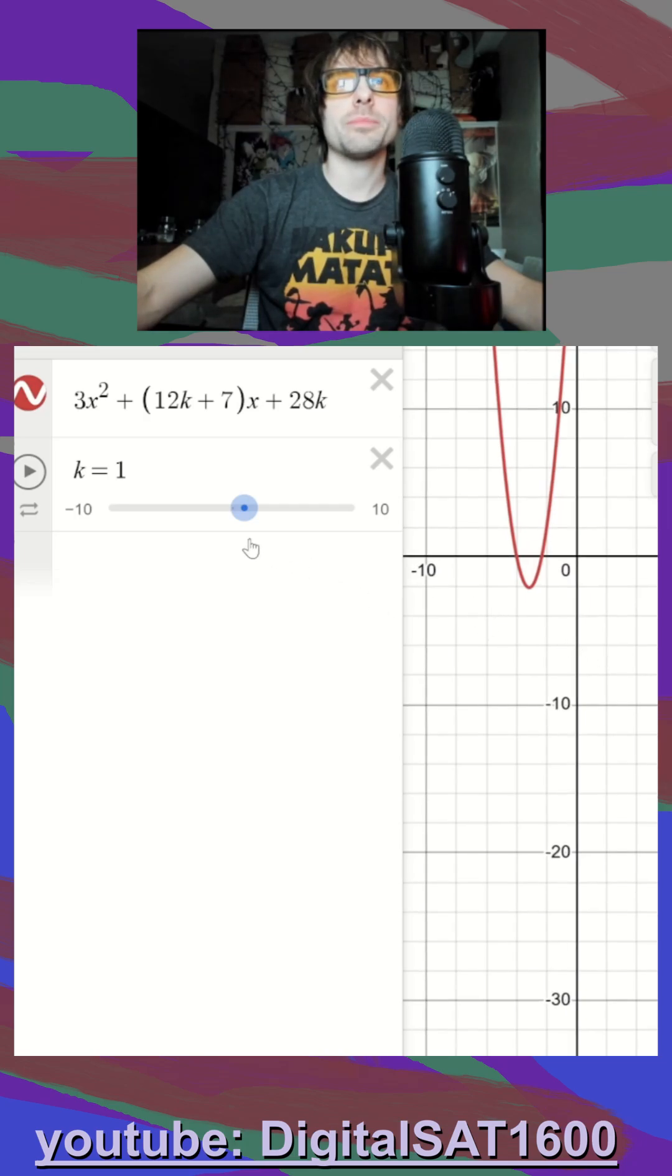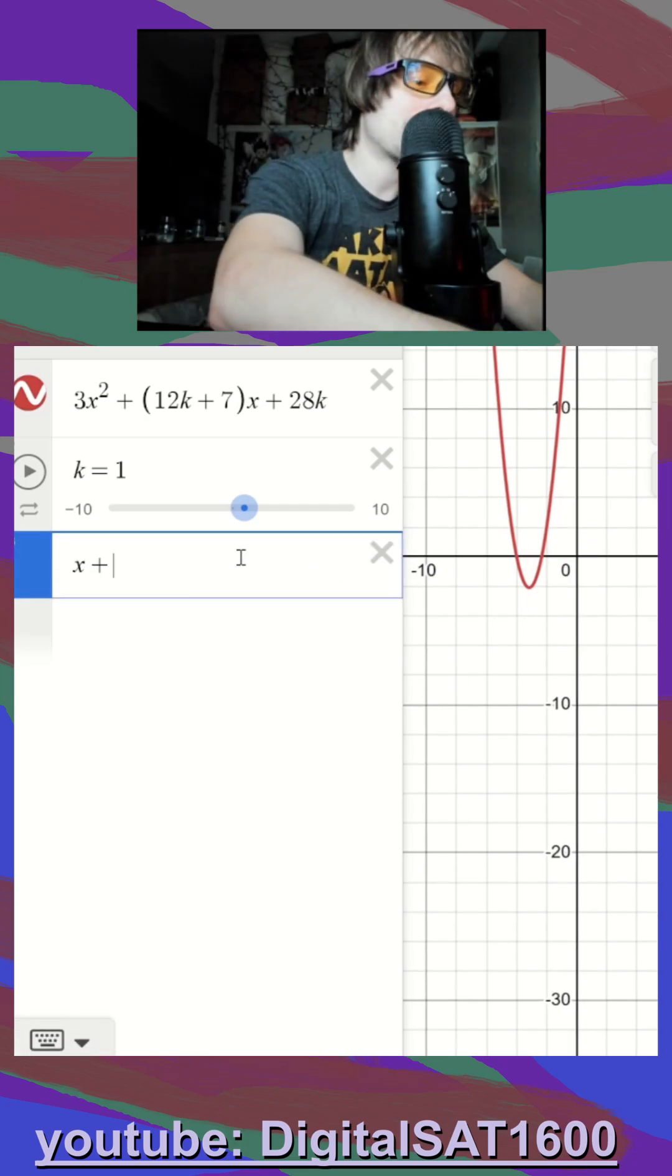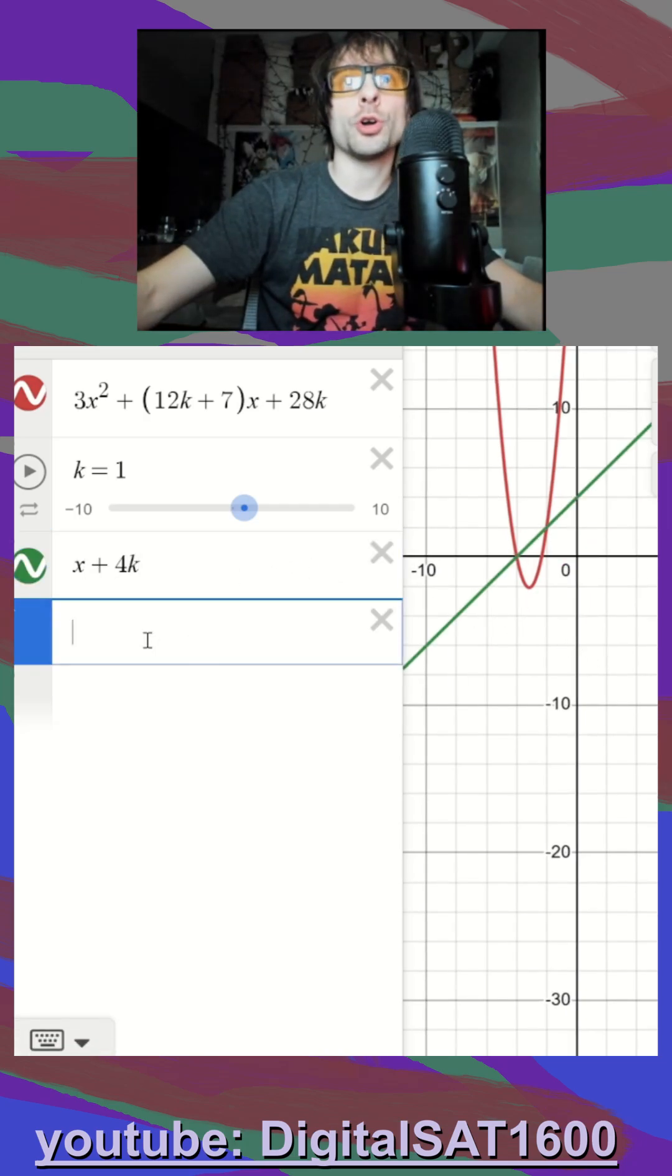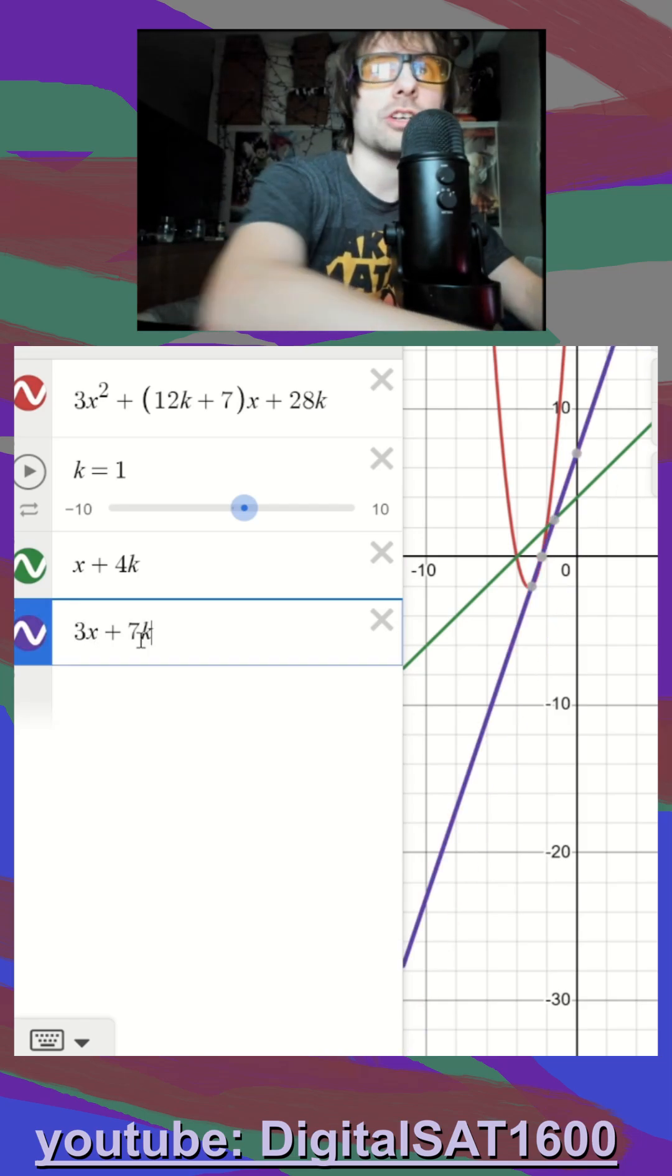I'm going to zoom in a little bit more for this one. And then you just throw in your two answer choices to see if those are going to be x-intercepts for your function.